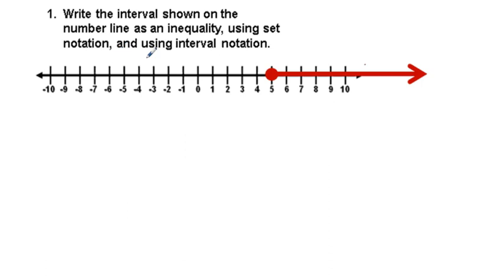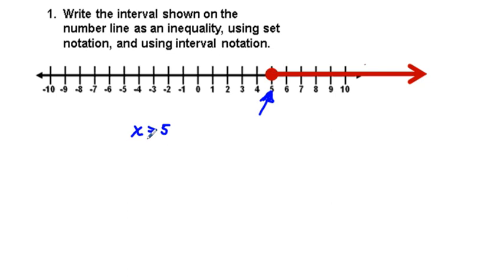Okay, one. Write the interval shown on the number line as an inequality using set notation and interval notation. Here we have our number line notation. In inequality notation, we see five being the critical number, and x is represented by the direction and content of where the arrow is pointed. So we can write that inequality notation as x is greater than five. But we have five included by virtue of this filled-in circle, so the full inequality notation for this number line representation is x ≥ 5.